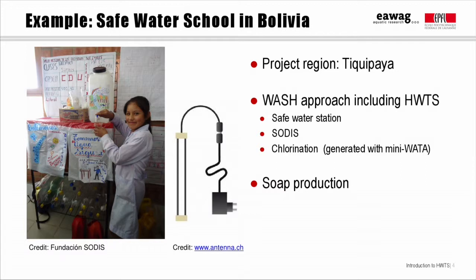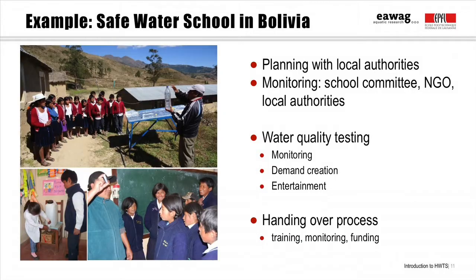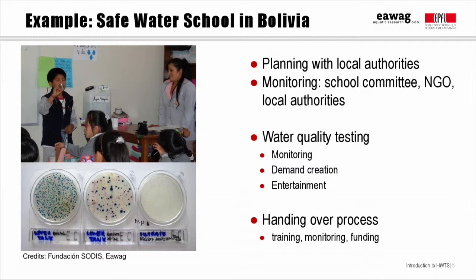The project also trains people to make their own soap, which is apparently fun as well as good for hand washing. The Safe Water School project is planned and implemented with local authorities — in this case, the municipality and the district education ministry of Tikipaya. The project is monitored at the school level by safe water committees, with two to three teachers and ten students per school. At the municipal level, the Fundación SODIS monitors the project, and after the project is complete, this is taken over by the district education authorities.